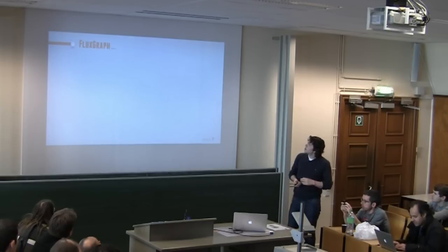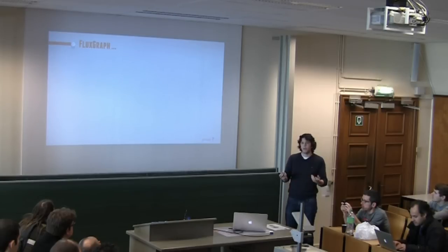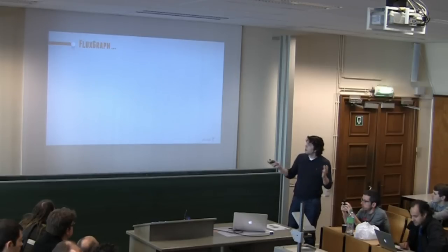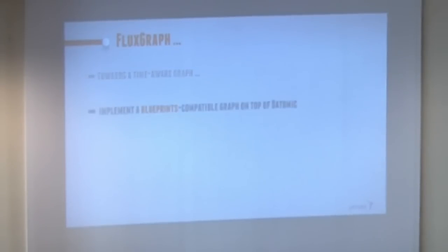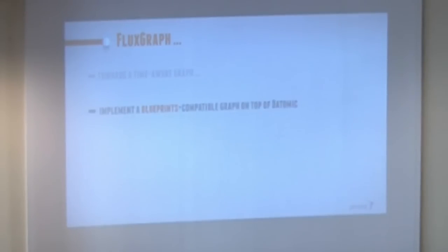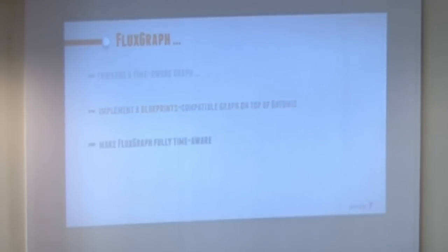What we wanted to do is check whether we could create something that would have the ability to deal with time in a more transparent way - you wouldn't need to deal with it yourself, but you'd be able to do queries and deal with time at the API level. So we want to go towards a time-aware graph. We don't want to start from scratch, so we basically implemented the Blueprints interface on top of Datomic. Datomic is a database created by Rich Hickey - it's quite cool. Basically, it's also facts: you add facts to a table and you never overwrite.